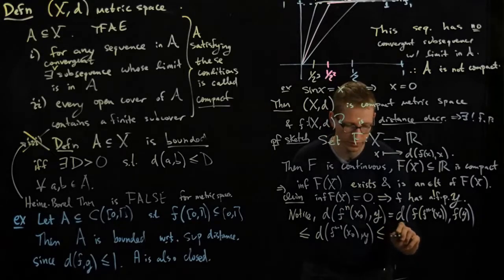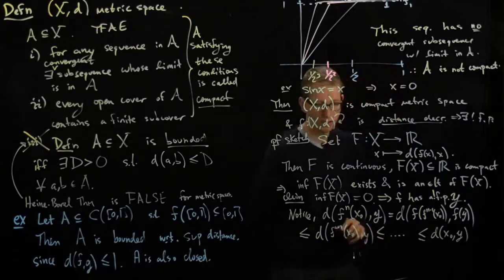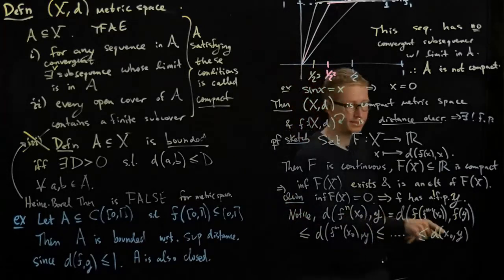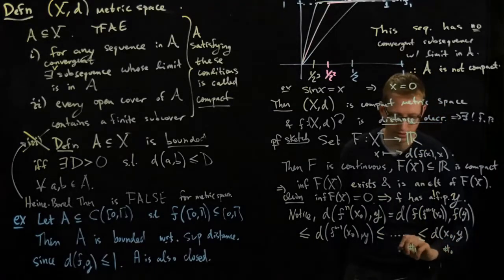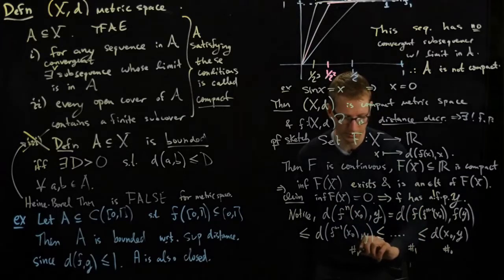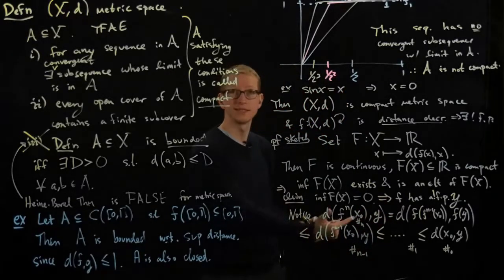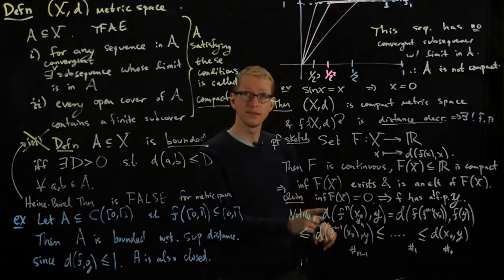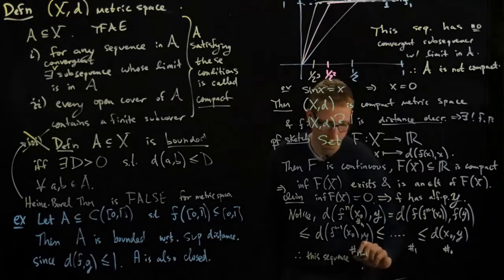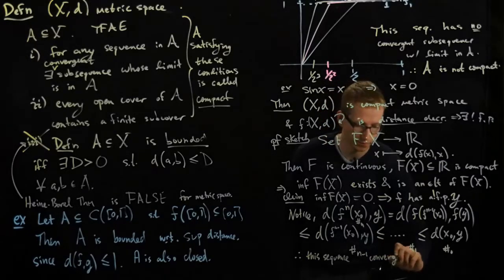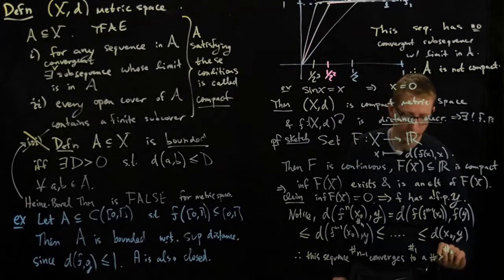until you get down to the bottom. And what you notice that if I read this backwards, I get a sequence of numbers, so call this number zero, then this one is number one and so on, here's number, in this case it would be n minus one, this is number n. The sequence of these distances is decreasing and it's bounded from below by zero. Therefore this sequence converges by the monotone convergence theorem to a number greater than or equal to zero.